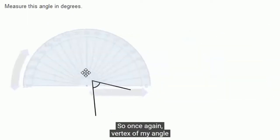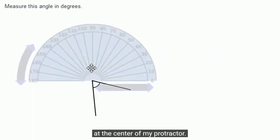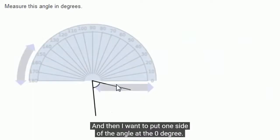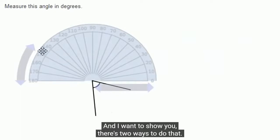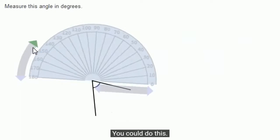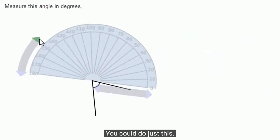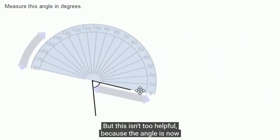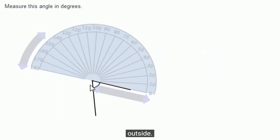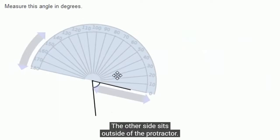So once again, vertex of my angle at the center of my protractor. And then I want to put one side of the angle at the zero degree. And I want to show you there's two ways to do that. But this isn't too helpful because the angle is now outside. The other side sits outside of the protractor.